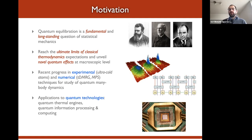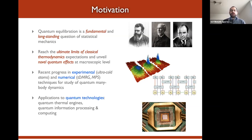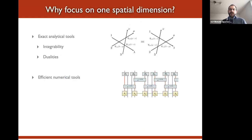Why is this problem more feasible to study now? On one hand, experimental techniques allow the study of quantum many-body dynamics in ultracold atoms. On the other hand, there are very efficient numerical tools like TDMRG, MPS, and tensor network-based methods that allow us to simulate quantum many-body dynamics and get a glimpse of what is happening in a controllable situation.